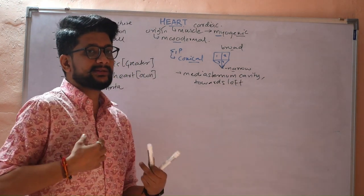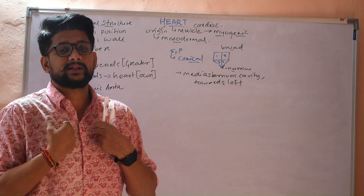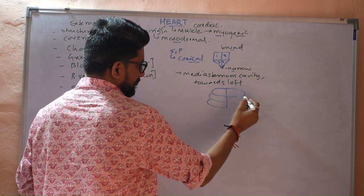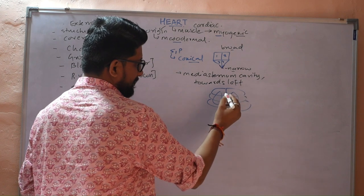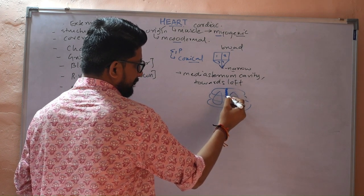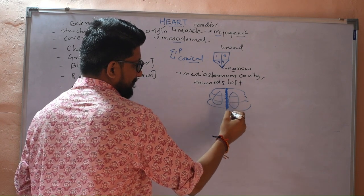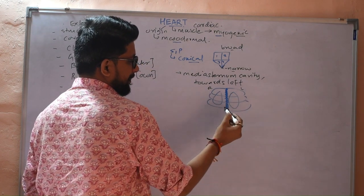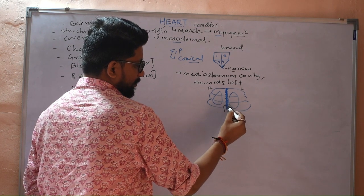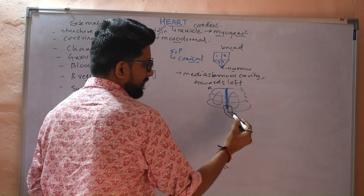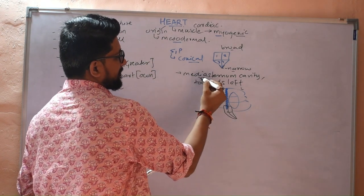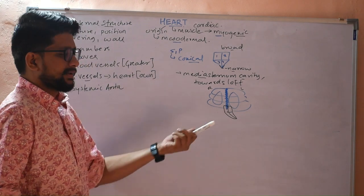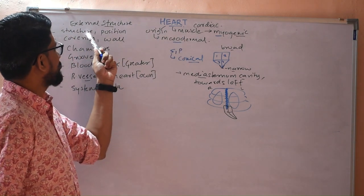The ribcages are basically the bones present in the thoracic or chest region. In this region you have the right lung and left lung. The middle bone is known as the mediastinum bone, and the cavity around it is called the mediastinum cavity. Your heart is situated in this mediastinum cavity, slightly towards the left part. These are the points you can mention for structure and position.